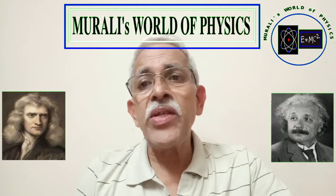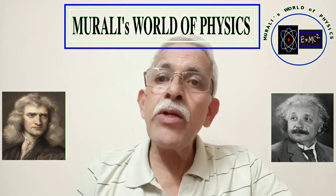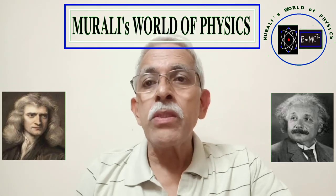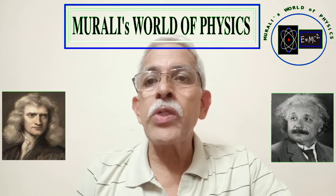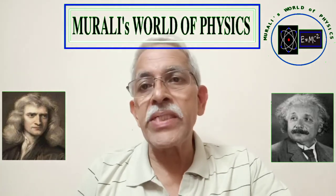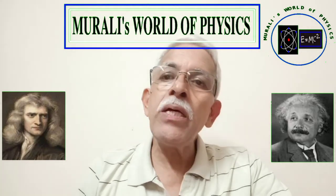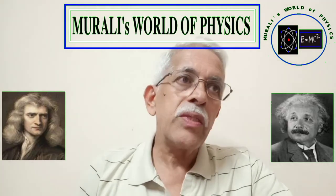The idea behind such studies is the fact that the particles or radiations emitted from these excited nuclei carry vital information about the nucleus and its properties and interactions. A nuclear physics experiment involves a source for generating energetic particles or radiations which bombard a target — a collection of a large number of nuclei of interest — and then suitable detectors to detect the outgoing particles or radiations, and a set of dedicated nuclear electronic instruments which process and analyze the detector output pulses.